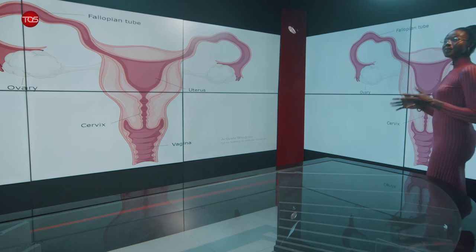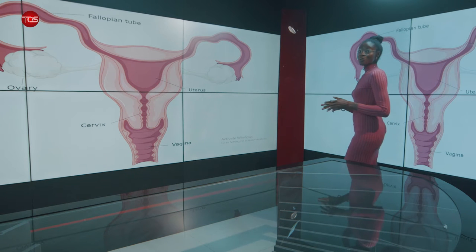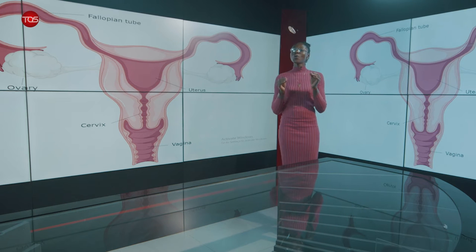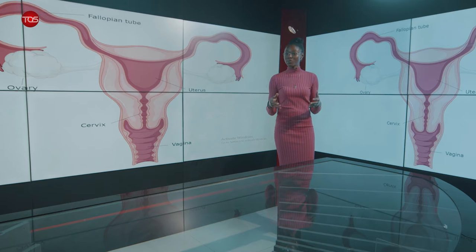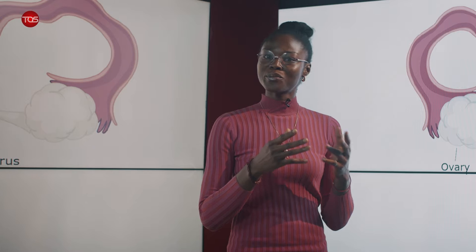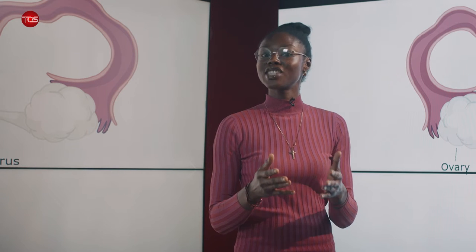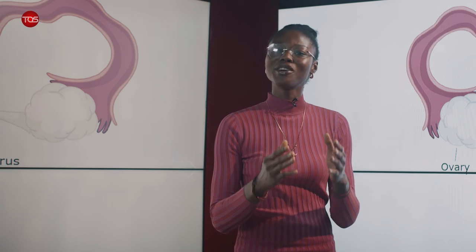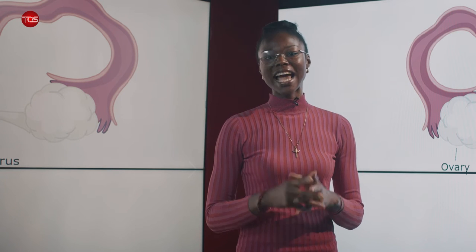The female anatomy is one of the main beautiful wonders of biological sciences. More remarkable is the female reproductive organ, whose function includes releasing eggs that can potentially be fertilized by sperm to form a zygote, producing and regulating female sex hormones such as progesterone and estrogen, and providing a home for a fertilized egg to develop during the course of pregnancy.